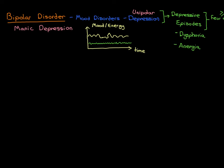Now let's talk about bipolar disorder — the one we're really interested in. In bipolar disorder, the reason it's called bipolar is that you can have two different types of episodes. In unipolar depression it was only one type — you went in one direction, having depressive episodes. Whereas in bipolar disorder you can go in two different directions — you can suffer from both depressive episodes and episodes called manic episodes.